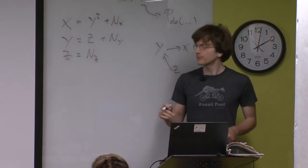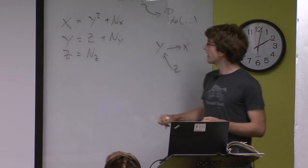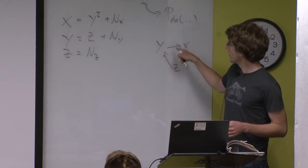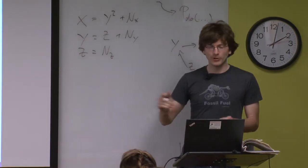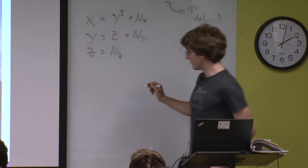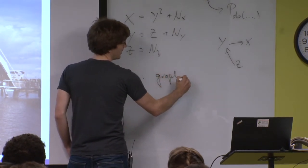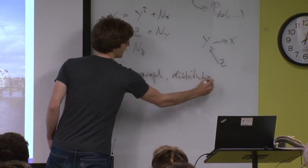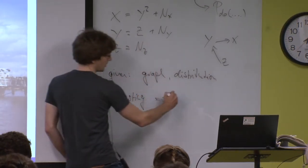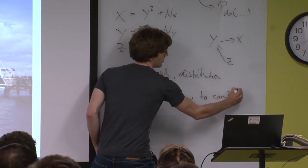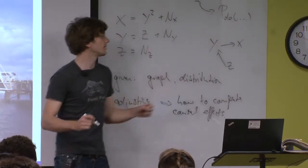We also looked at questions of adjusting. In linear Gaussian models, for example, you're often interested in summarizing the causal effects from z to x, done in the linear case by multiplying the path coefficients. When talking about causality, it's important to keep in mind what the problem is. If we are given the causal structure - the graph and the distribution - the theory of adjusting tells you how to compute causal effects.